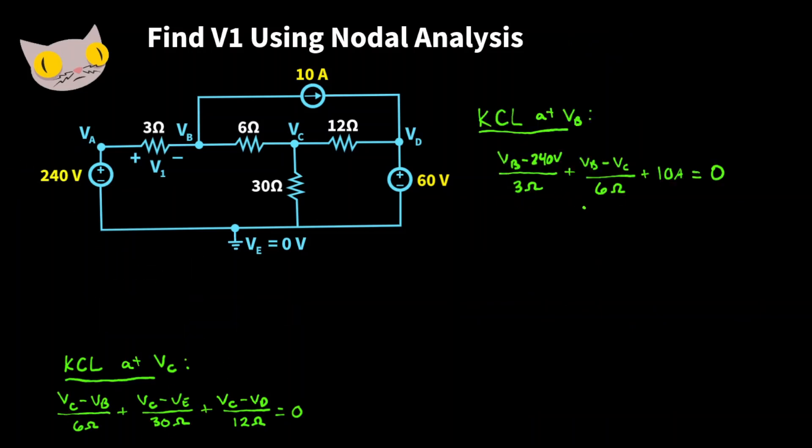So for this first equation, let's multiply each term by the lowest common multiple of three and six, which is six. So that's going to give us 2 times VB minus 240 volts plus VB minus VC plus 60 is equal to 0. And if you simplify that further, we're going to get 3VB minus VC is equal to 420.